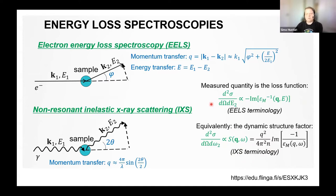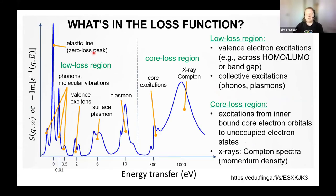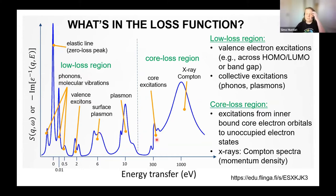What you find is a low-loss valence electron region and other low energy loss excitations, then higher energy transfers with a core loss region. In the low loss region, you always have a zero loss peak due to elastic scattering. When you go to inelastic scattering, you can excite phonons or molecular vibrations. You can see excitons in band-gap materials like semiconductors or insulators, and bulk and surface plasmons. At higher energy losses, you can see core electron excitations — from inner bound core electron orbitals to unoccupied electron states.